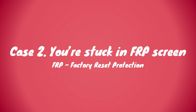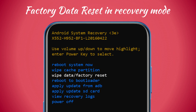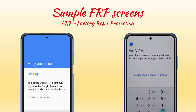Case two: you're stuck in the FRP screen. Ever since the world started using mobile devices, there has been an exponential increase in mobile theft cases. In most cases, lost devices were never returned to the original owners — someone who stole or picked up the device was able to factory reset it and sell it on the black market or use it as their personal device. To overcome this problem, large tech companies such as Apple and Google have come up with a security feature called Factory Reset Protection, or FRP, on Android devices.